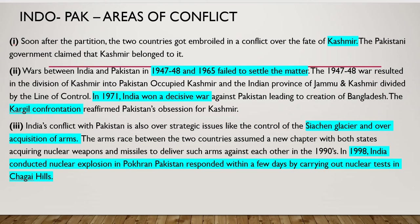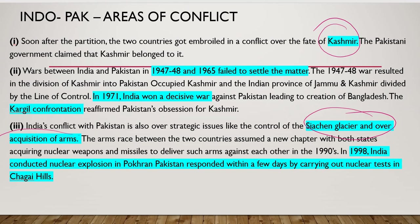Now let us discuss India-Pakistan conflicts. The first conflict is Kashmir — Pakistan claims that since Kashmir has a Muslim majority, it should be part of Pakistan. India says no, and we know the history: Raja Hari Singh signed the Instrument of Accession with India, not Pakistan. There have been wars between India and Pakistan in 1948, 1965, 1971, and again in 1999 at Kargil — all of which India won. The 1971 war also led to the creation of Bangladesh. There is also a conflict over the Siachen Glacier.